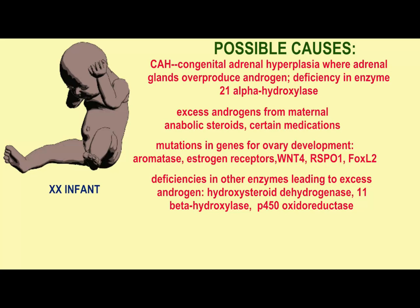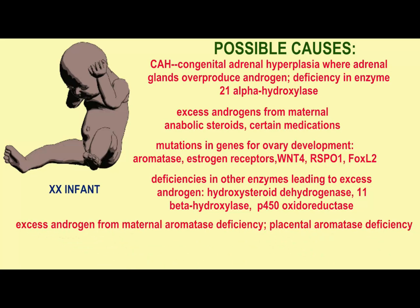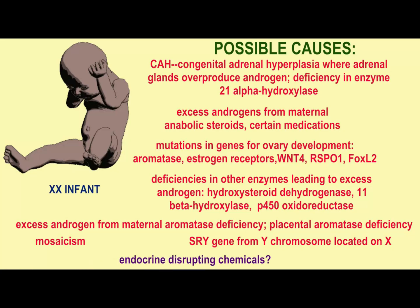There could be deficiencies in other enzymes which could lead to an excess of androgen. If the mother is deficient in the enzyme aromatase, then excess testosterone is produced because she isn't making as much estrogen. This could also be a problem of the placenta where there's a placental aromatase deficiency.